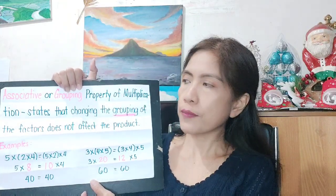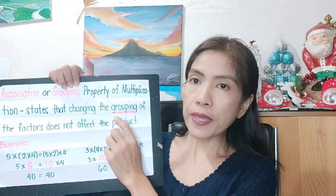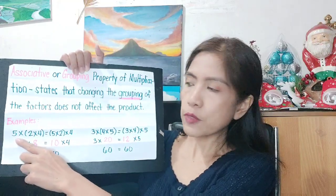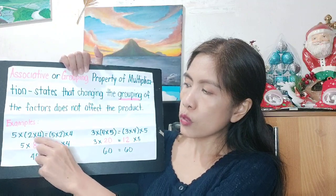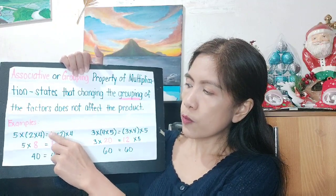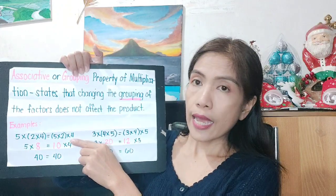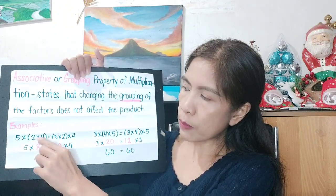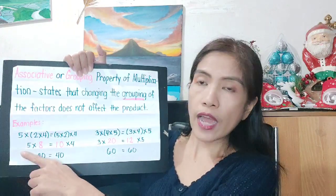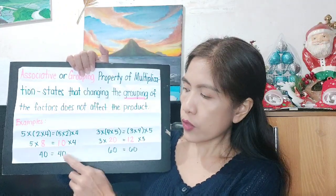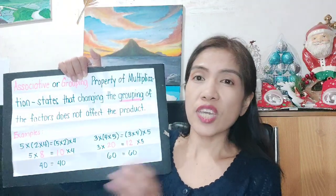Number four is the associative or grouping property of multiplication. It states that changing the grouping of the factors does not affect the product. For example, 5 times (2 times 4) equals (5 times 2) times 4. Here, 2 times 4 is 8, and 5 times 8 is 40; while 5 times 2 is 10, and 10 times 4 is 40. The product is the same even though the grouping changed.